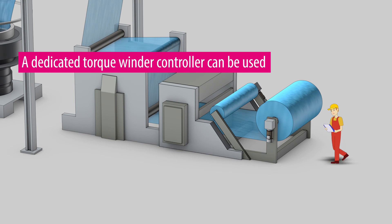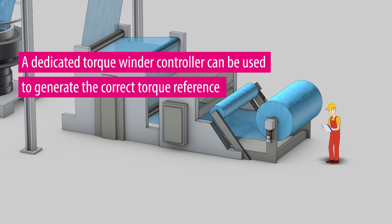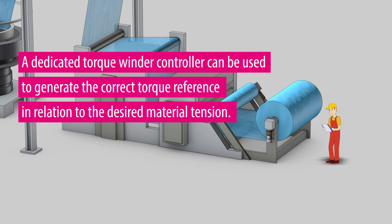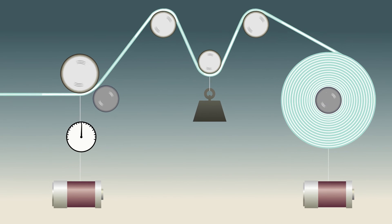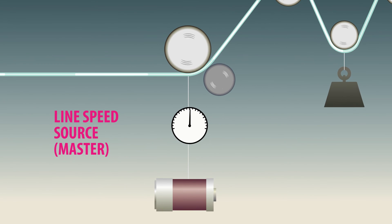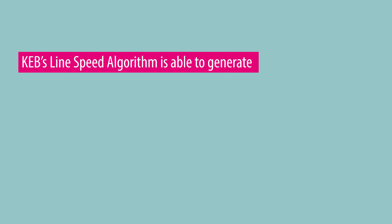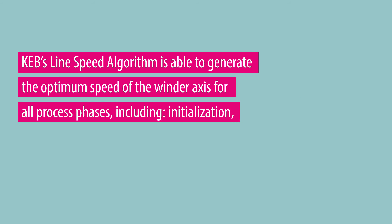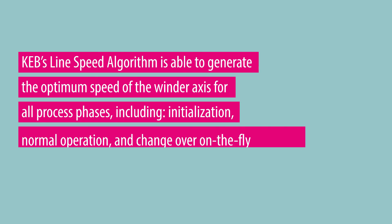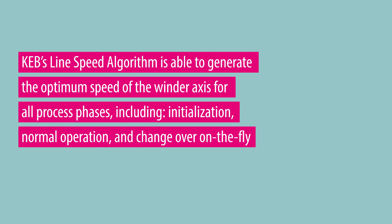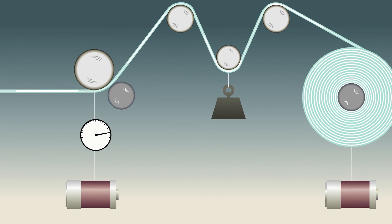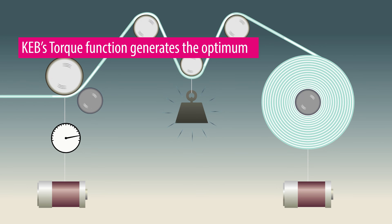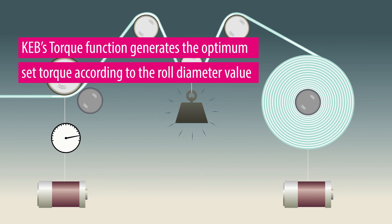A dedicated torque winder controller can be used to generate the correct torque reference in relation to the desired material tension. KEB's line speed algorithm is able to generate the optimum speed of the winder axis for all process phases, including initialization, normal operation, and changeover on the fly. KEB's torque function generates the optimum set torque according to the roll diameter value.